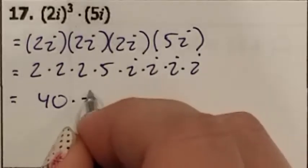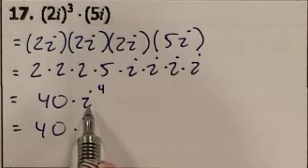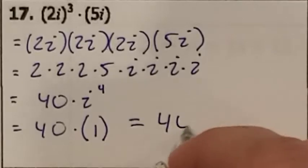If the i is written 4 times, that means we have i to the fourth. I have 40 being multiplied by, what's i to the fourth? We said i to the fourth was 1. So 40 times 1 is 40.